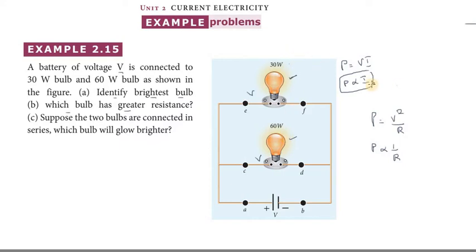Third question: suppose these two bulbs are connected in series, which bulb will grow brighter? In series, we connect the 30W and 60W bulb. In series, the current is the same.